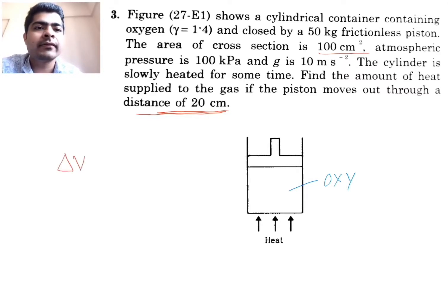So change in volume is how much? So delta V will be 100 cm squared into 20 cm, so that will be equal to 2000 cm cubed.